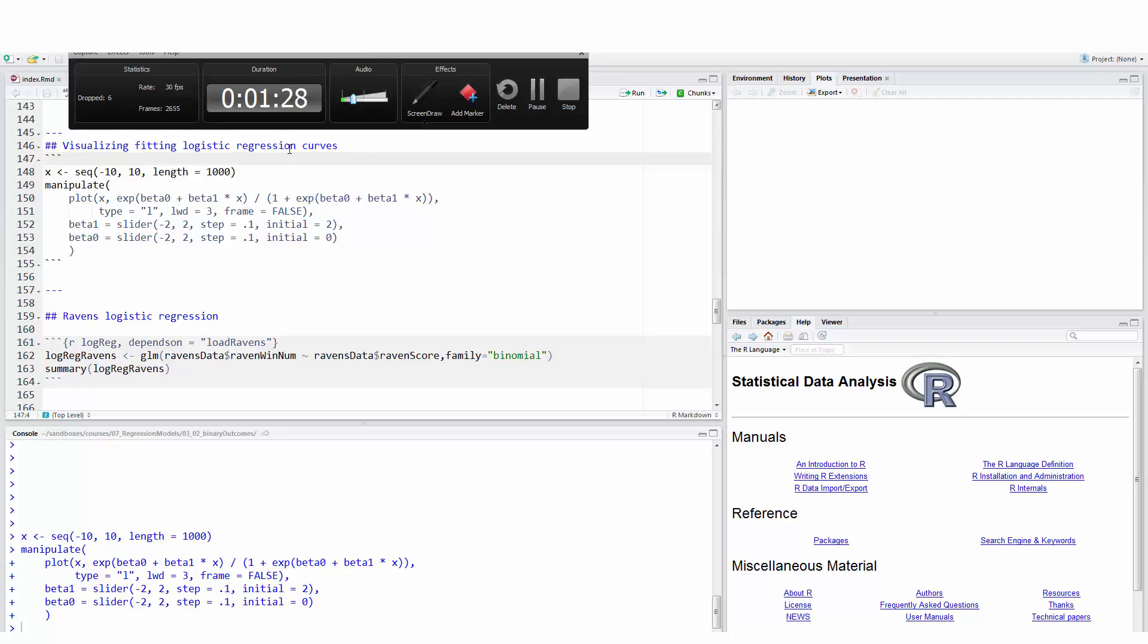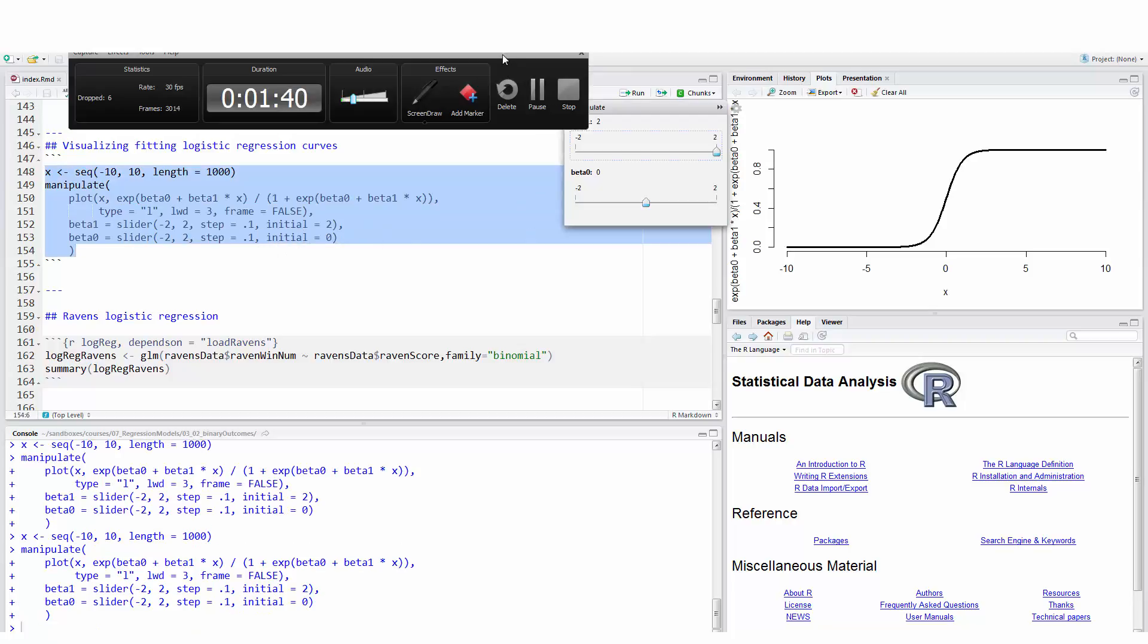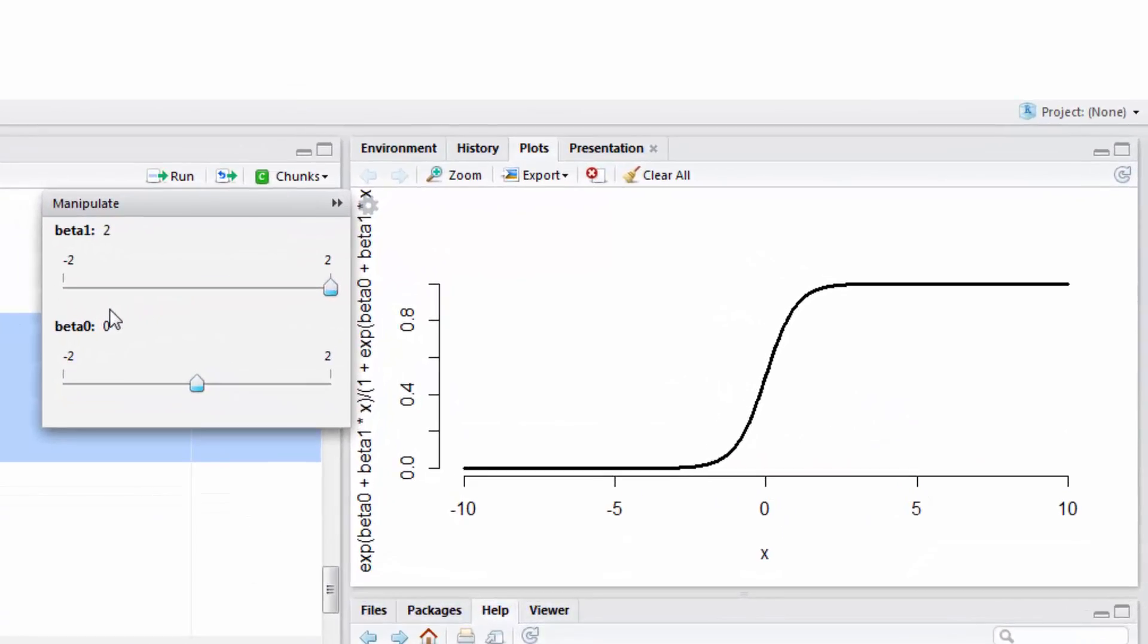Okay, so let's look at logistic regression curves and think about how R is fitting that, fitting the data. So here I'm going to use the package manipulate, and I have my beta two and my beta one set here.